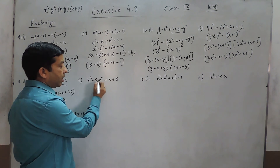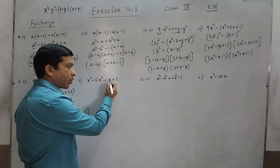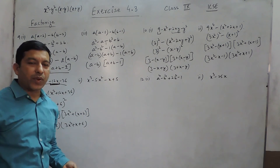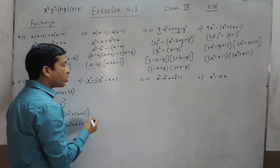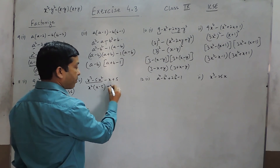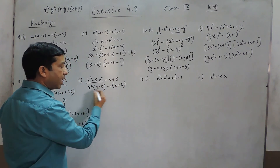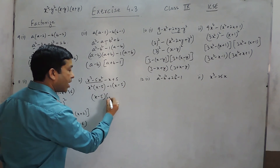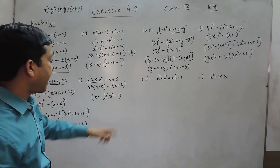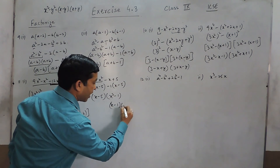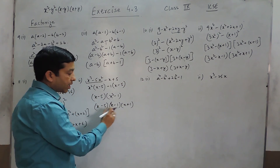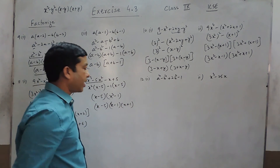Now this is not a perfect square, this is not a perfect square, this is not a perfect square, and this is also not a perfect square. When there is no perfect square, the best way is to take something common. In these two terms if I take x squared common it becomes x minus 5. Here if I take minus 1 common it again becomes x minus 5. So I can take x minus 5 as common in these two terms and the remaining value becomes x squared minus 1. x squared minus 1 can be factored using the identity into x minus 1 and x plus 1. So the answer is x minus 5, x minus 1, and x plus 1 as the three factors.